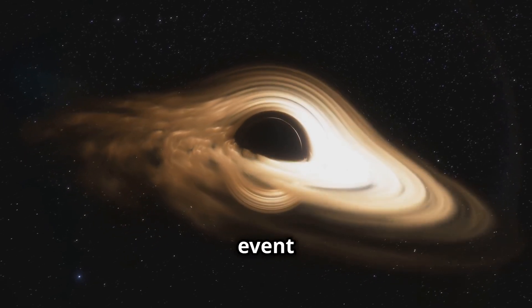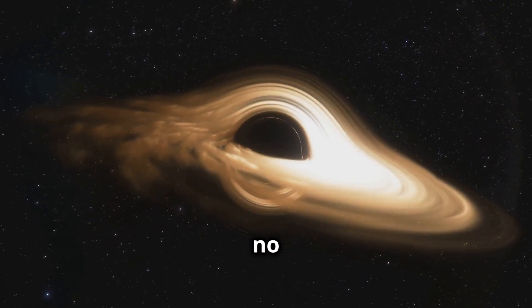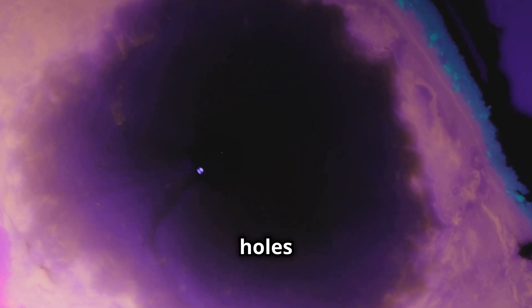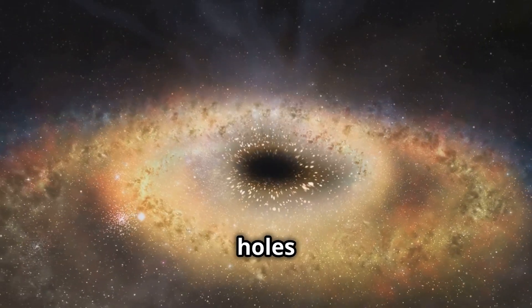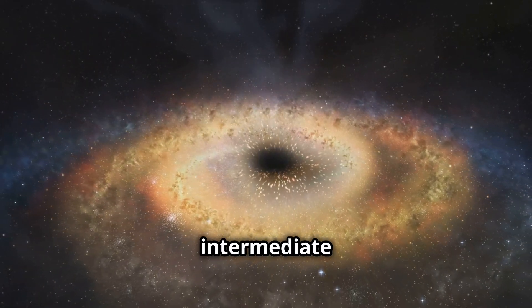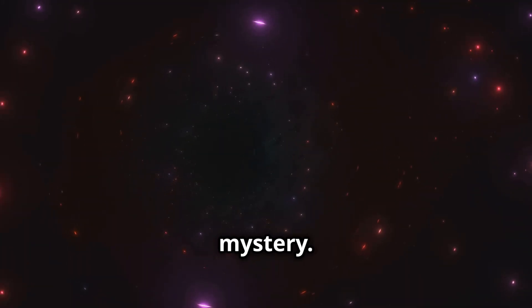Around it, the event horizon marks the point of no return. Black holes come in different sizes: stellar black holes, supermassive black holes at the centers of galaxies, and intermediate black holes, which are still a bit of a mystery.